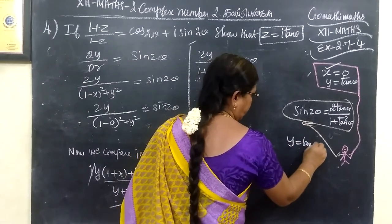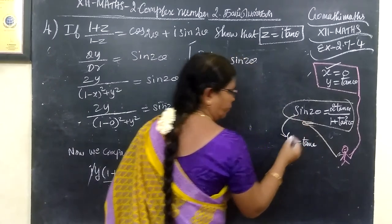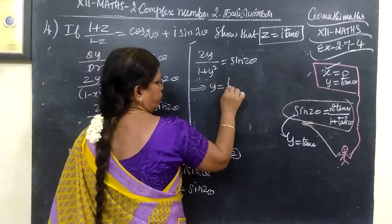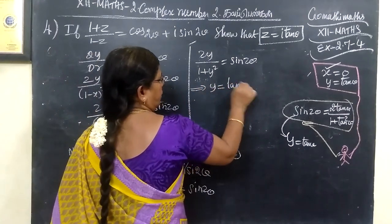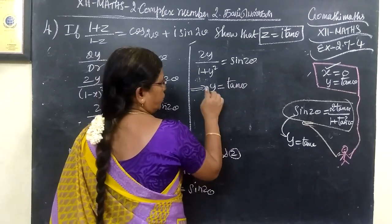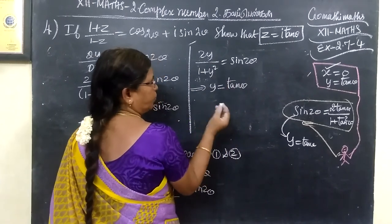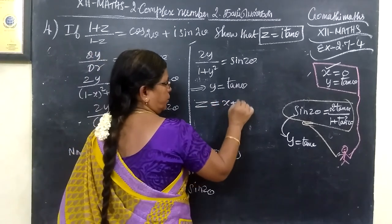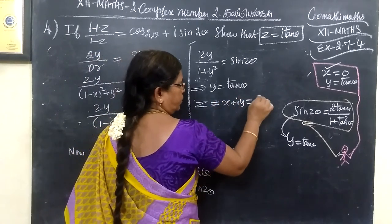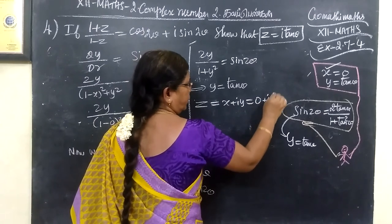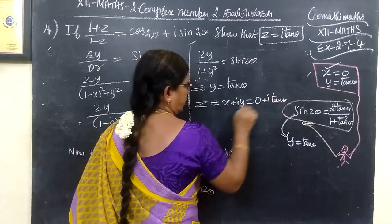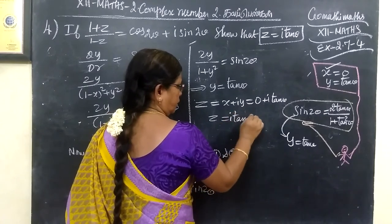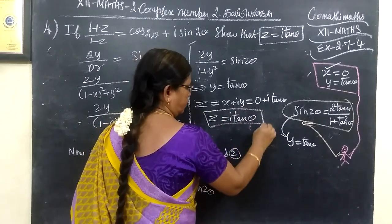Using this formula with y tan θ, which implies y equals tan θ. So we have proved it. Therefore, z equals x plus iy equals 0 plus i times tan θ, so z equals i tan θ. This is what we set out to prove.